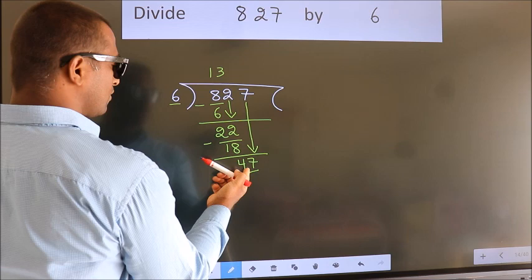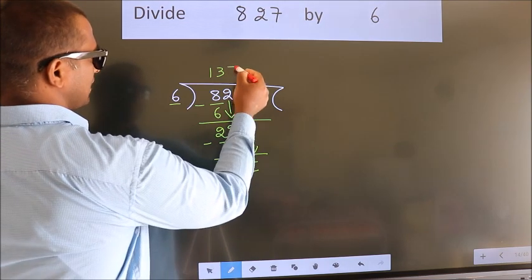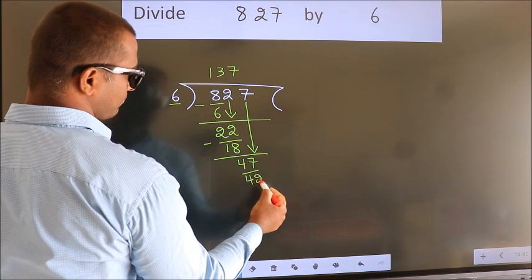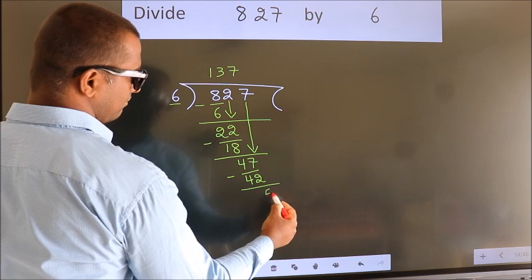A number close to 47 in the 6 table is 6 sevens, 42. Now we subtract and get 5.